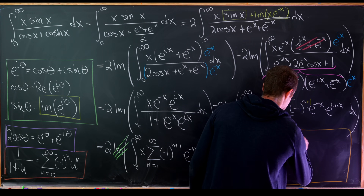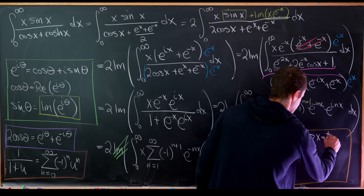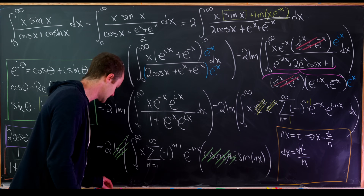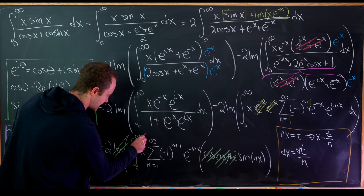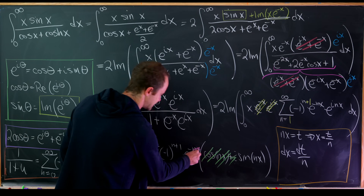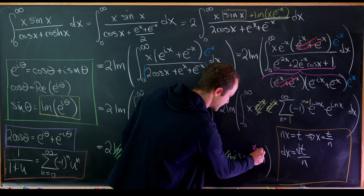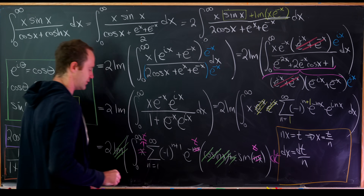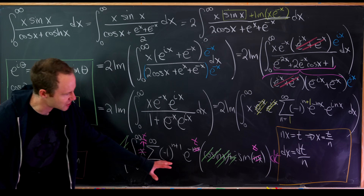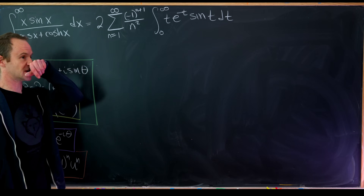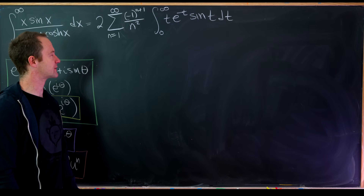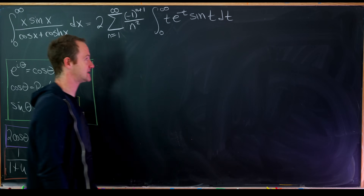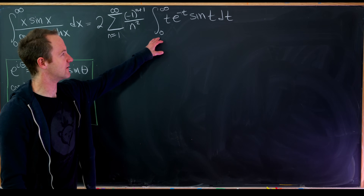After the substitution n x equals t, x is replaced with t over n, and n x in the exponential and sine becomes t, while dx is replaced with dt over n — giving an n squared out front. So our goal integral equals two times the sum as n goes from one to infinity of minus one to the n plus one over n squared, times the integral from zero to infinity of t times e to the minus t times sine of t. Now let's find the value of this remaining integral.